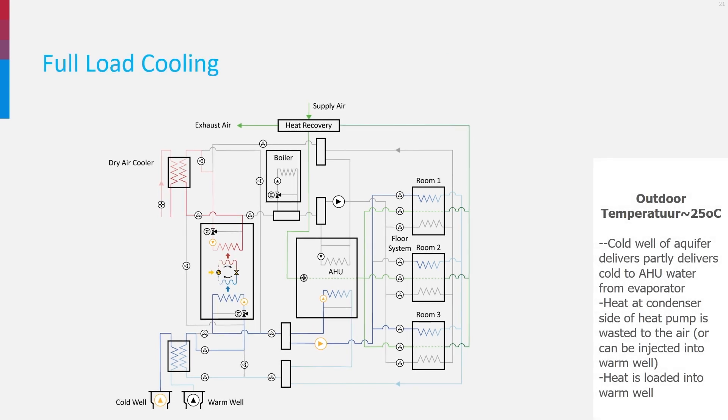In full load cooling, water from the cold well delivers cold to the air handling unit and sometimes also additional cold to the chilled water from the evaporator of the heat pump. By doing this, heat is loaded to the warm well. The heat produced at the condenser side of the heat pump is wasted to the air through the dry air cooler. If needed, it can also be injected into the warm well.